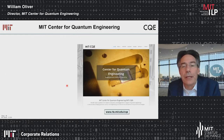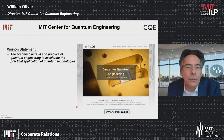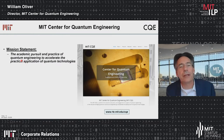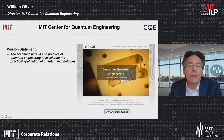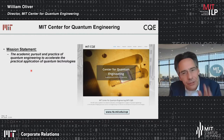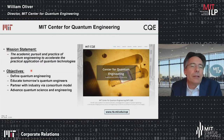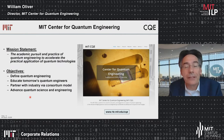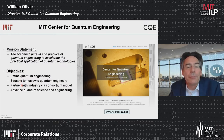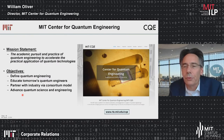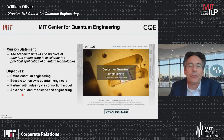The center website is available at the URL shown here. Our mission statement is the academic pursuit and practice of quantum engineering to accelerate the practical applications of quantum technologies. Quantum engineering is both science and engineering — the science is not over, but we need to start engineering systems of quantum qubits. The objectives include: defining quantum engineering, developing textbooks and curriculum to educate tomorrow's quantum engineers and create a quantum workforce; partnering with industry via a consortium model; and advancing quantum science and engineering.